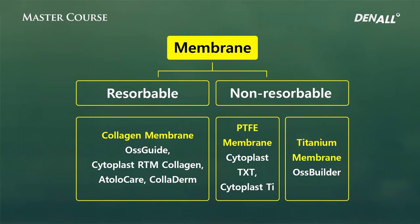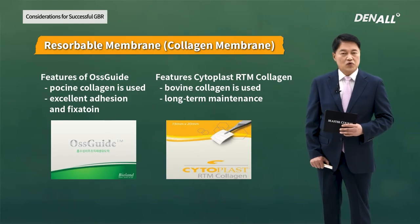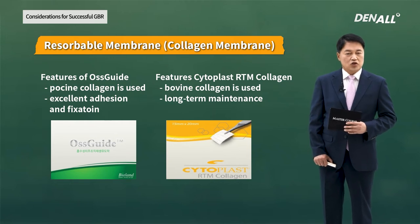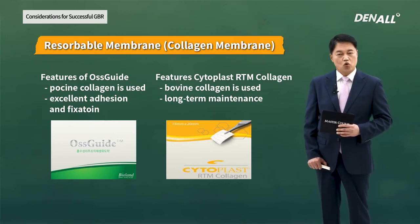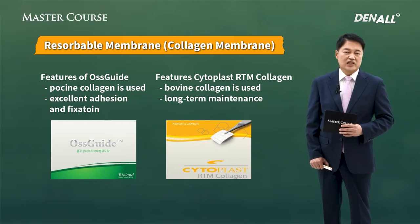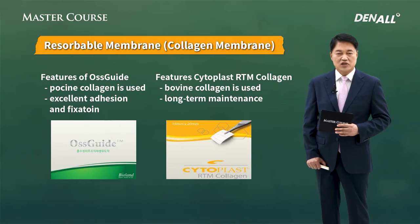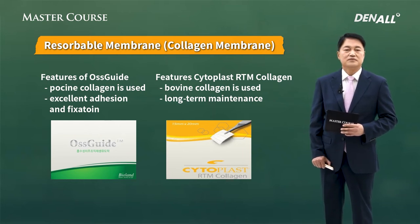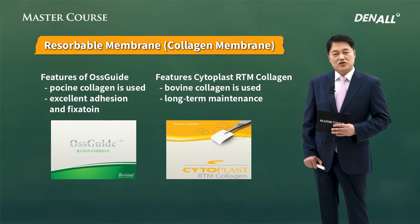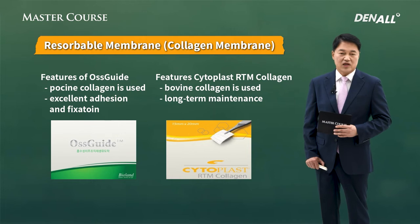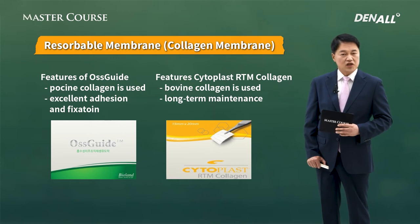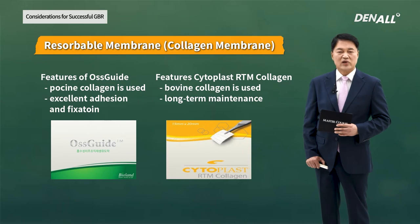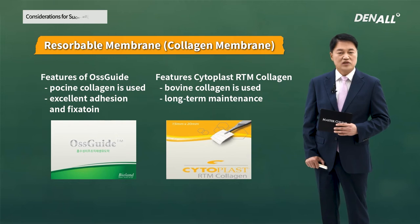I use cytoplast and Osbuilder for titanium membrane. Comparing oskyte and cytoplast — oskyte uses porcine collagen and cytoplast uses bovine collagen. Oskyte has very nice adhesion and fixation, cytoplast can be maintained long term, and oskyte is also very economical. One thing to note: in order to maintain appropriate stiffness, you should not irrigate oskyte — if you irrigate it, it becomes very mushy and difficult to handle.